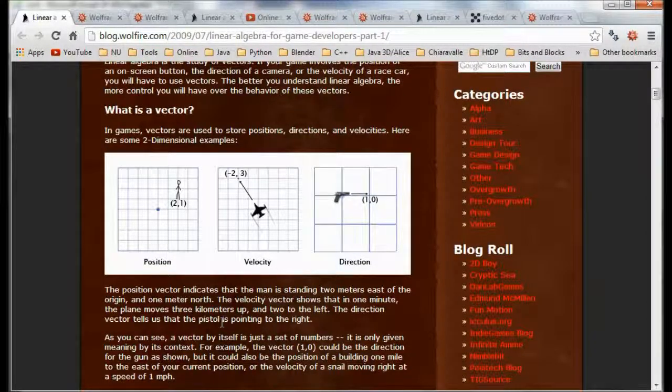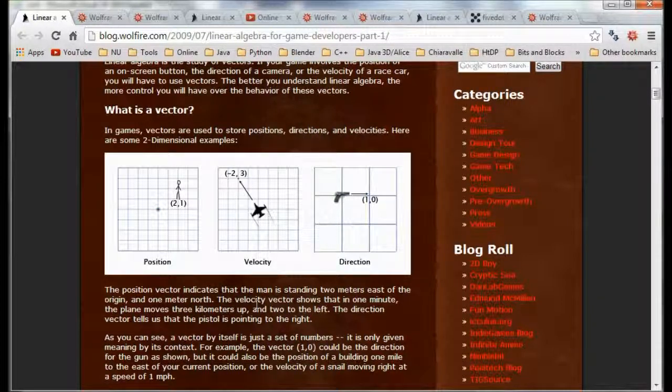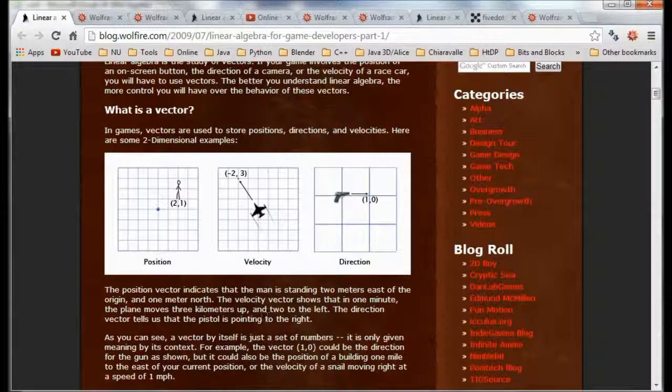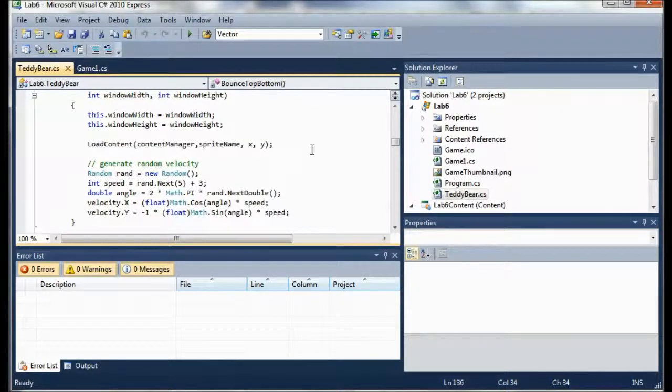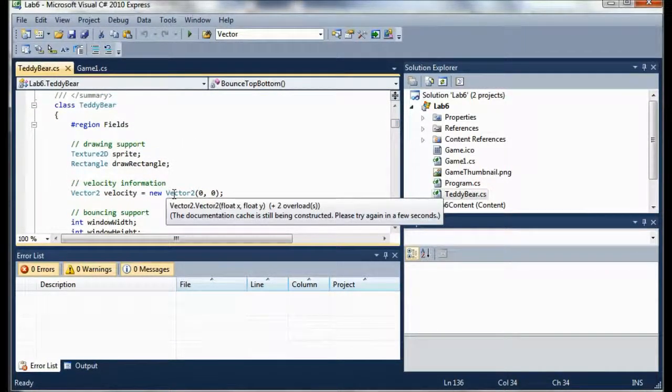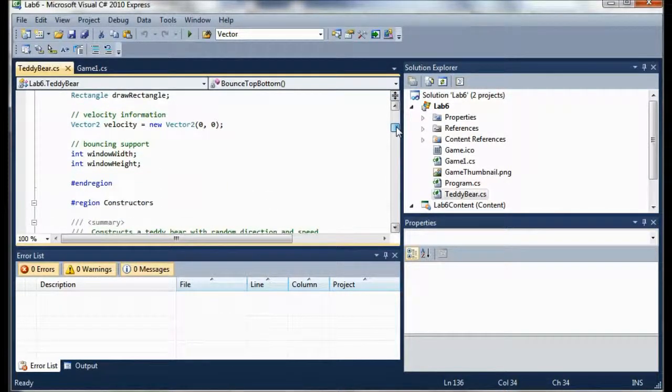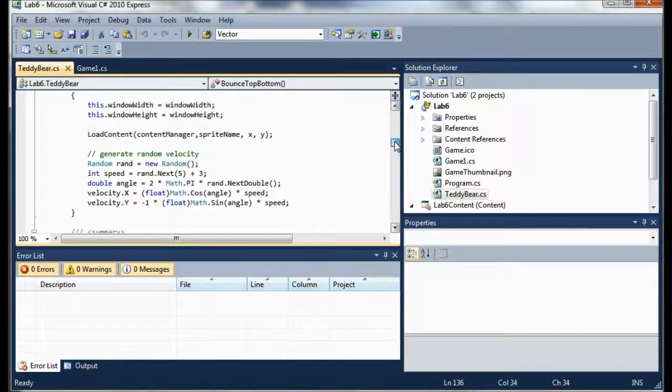The first thing it talks about is this 2D game. We used 2D vectors in the teddy bear class from lab 6. You might remember we had this vector object that keeps track of two floats - a two-dimensional vector, the Vector2 object. You'll even notice down here we make use of cosine and sine, these trig functions.